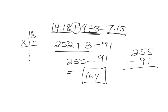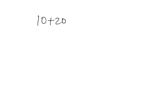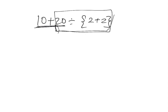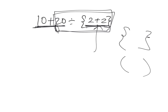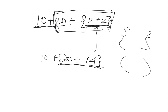Let's take more examples to make sure we really understand the concept. Number thirty: ten plus twenty divided by the quantity two plus two. The bracket containing two plus two must be resolved first — parentheses come first in PEMDAS. Two plus two is four, so we have twenty divided by four, which is five. The ten was waiting, so ten plus five gives fifteen.